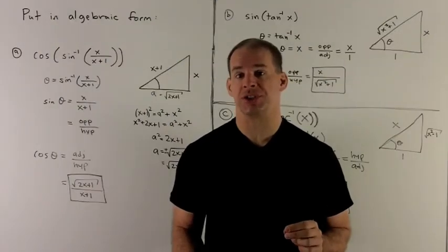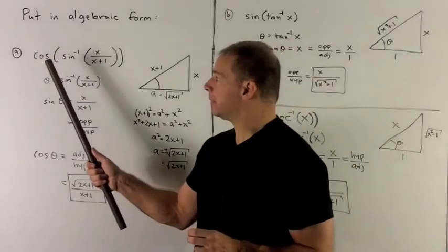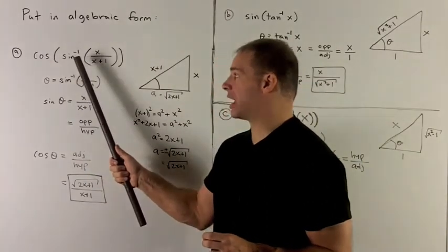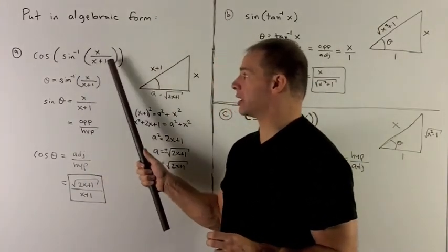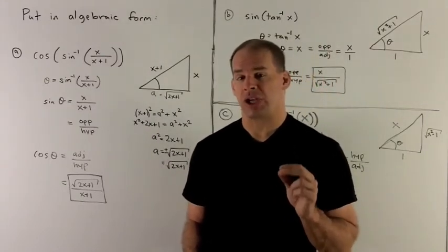Put the following trig expressions in algebraic form. So my first one is cosine of inverse sine of x over x plus 1. Now notice we're not going to use the checklist here.